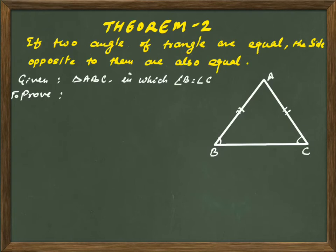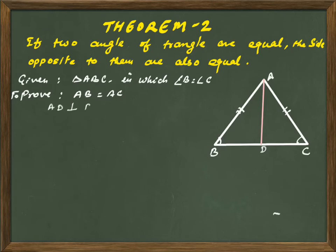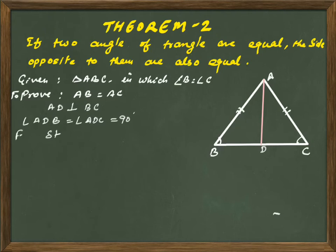To prove AB equals AC, we will draw a perpendicular from vertex A to line BC. The foot of the perpendicular is point D, so AD is perpendicular to BC, meaning angle ADB equals angle ADC equals 90 degrees. Now we will write the statement for the proof.